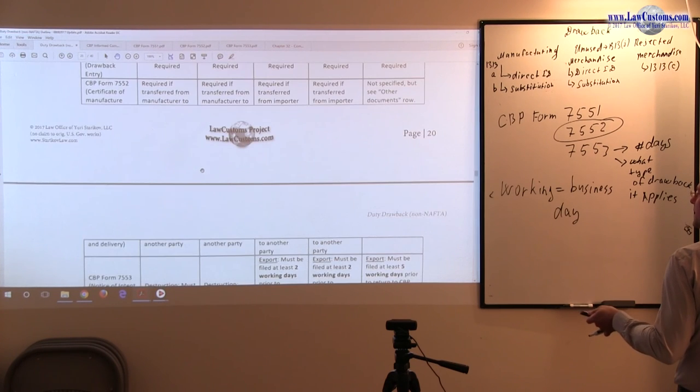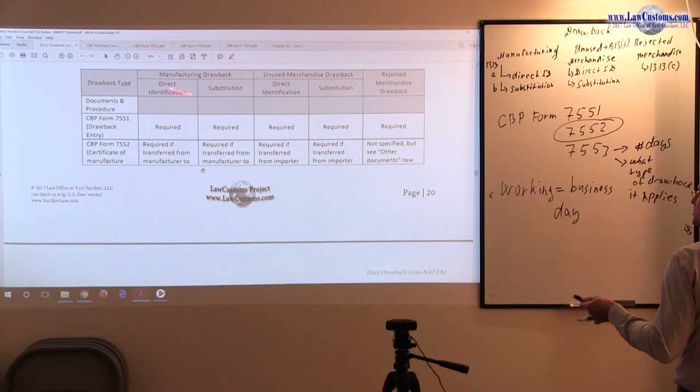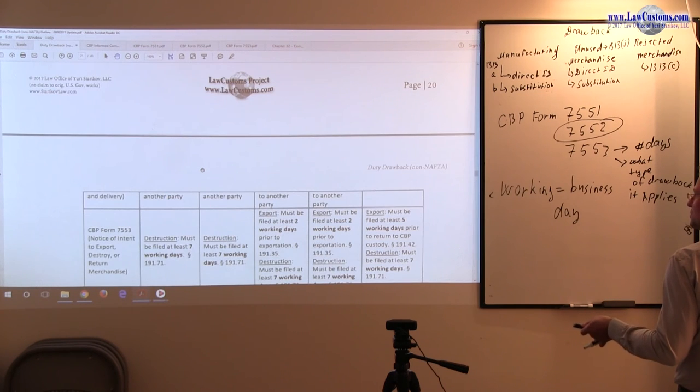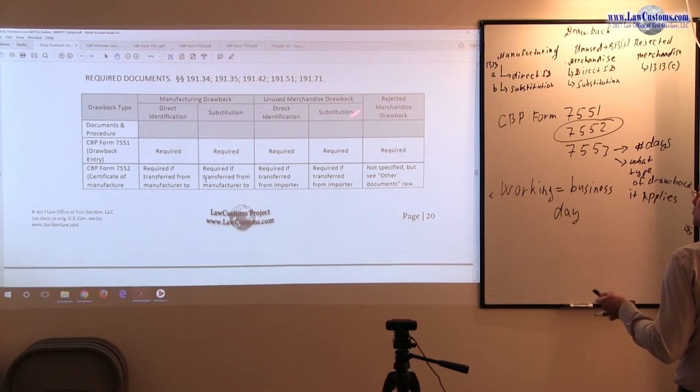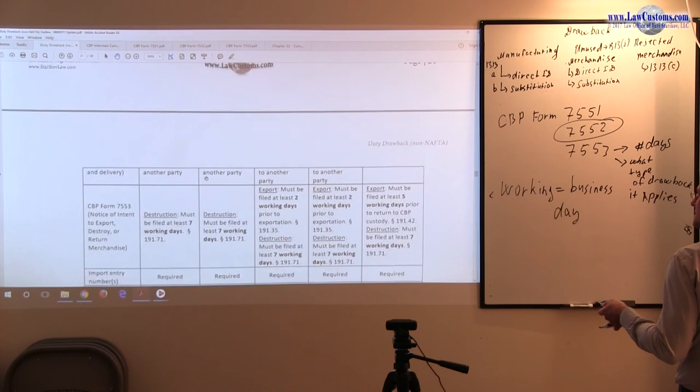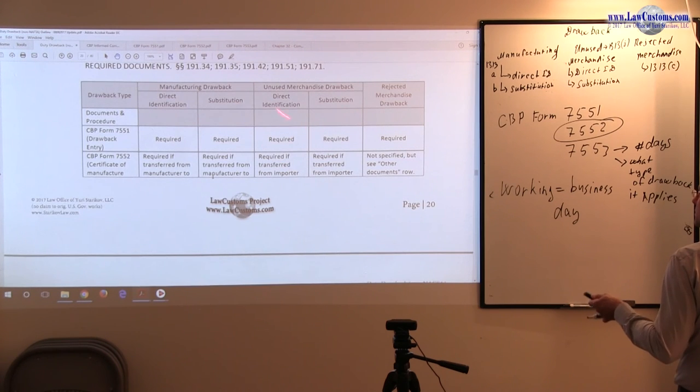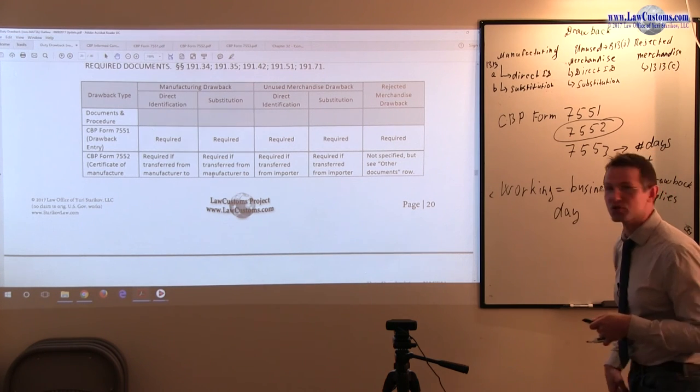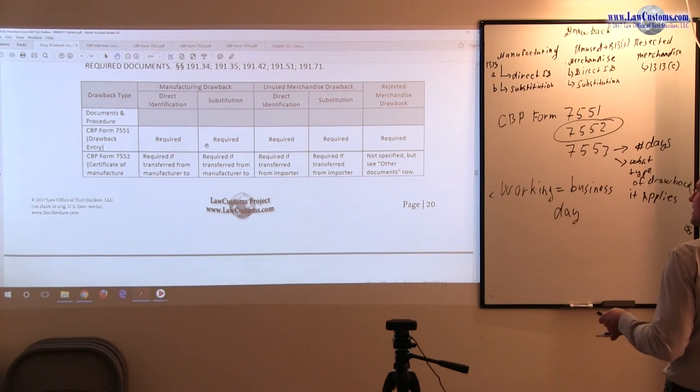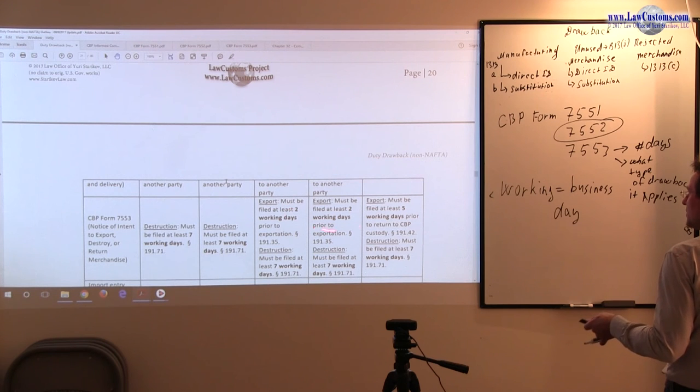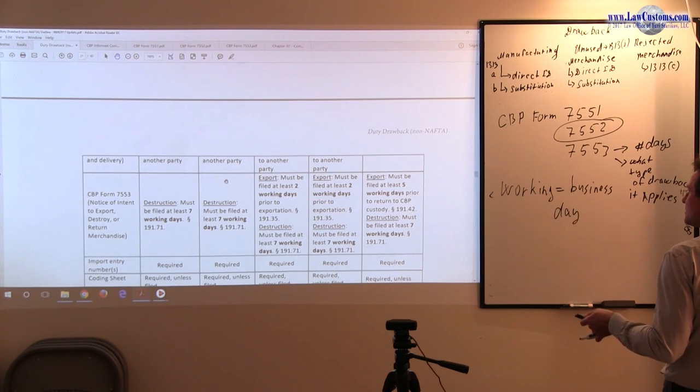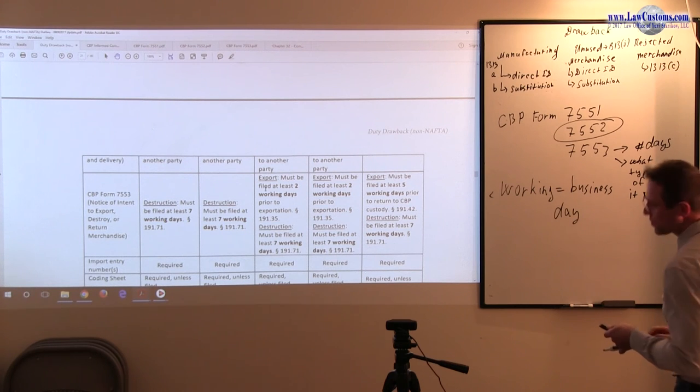So notice, the first tool is applicable to the manufacturing drawback variations. The export one, there is no such requirement of the manufacturing drawback, no such requirement of export notice. Unused merchandise and rejected merchandise is another story. In this case, both direct identification and substitution variation for unused merchandise, they have two day, two working day requirements for filing, at least two working days, and the export has five working days requirement.